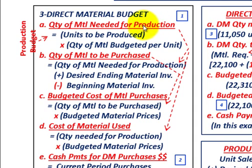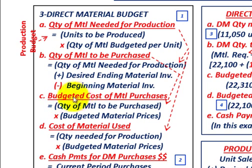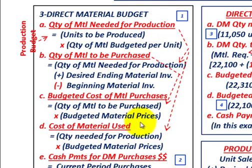Step four: cost of material used = quantity needed for production × budgeted material prices. Step five: cash payments for direct material purchases = current period purchases paid in current period + prior period purchases paid in current period. You can see how the steps build on each other: step one feeds into step two, step two feeds into step three, and step one also feeds directly into step four.